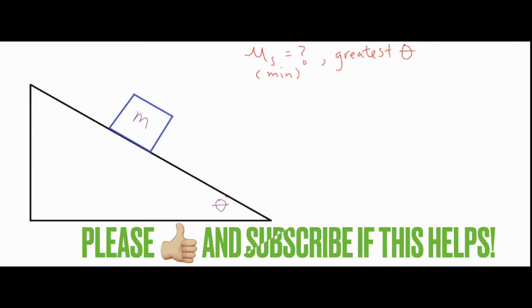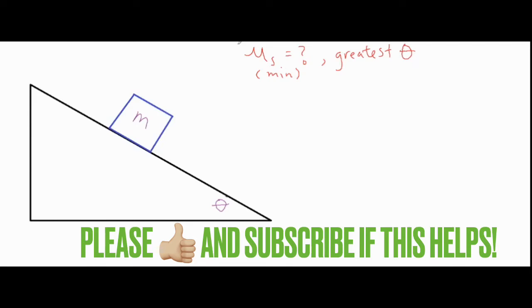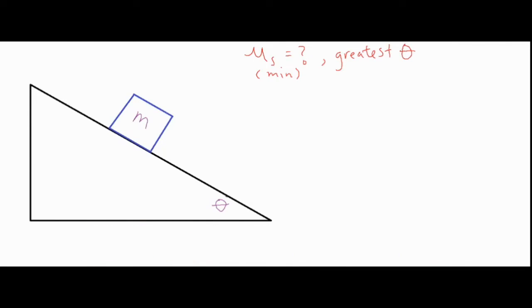In this video I'm going to be talking about the minimum value of the coefficient of static friction, the minimum value in order to keep an object from sliding on a particular ramp. The second thing we're solving for, which is basically the same process, is the greatest value of theta, the angle of the ramp, before an object begins to slide.